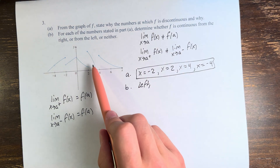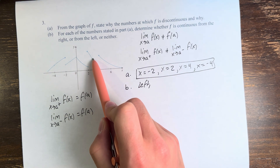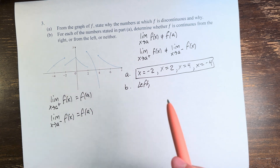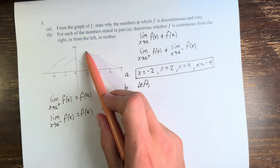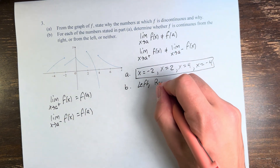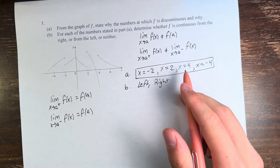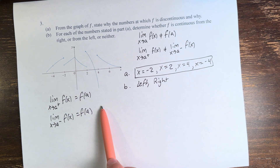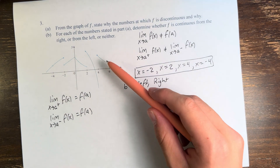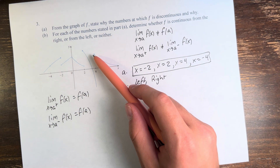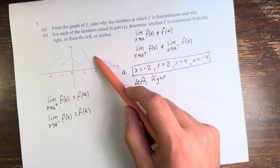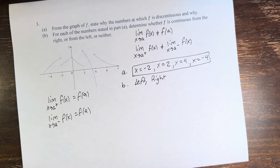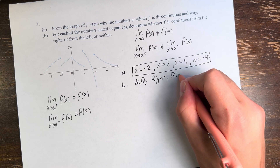At x equals 2, the shaded circle we're approaching is coming from the right. From the left, we're approaching an open circle, meaning the value of the function is not there — so it is continuous from the right. At x equals 4, from the left it approaches negative infinity, so that can't be it. But from the right, we do see that it is approaching the value the function equals at x equals 4, that shaded point. Therefore, it is continuous from the right.